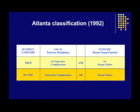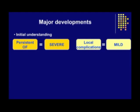But it is now recognized that the duration of organ failure is an important determinant of outcome, in particular that persistent organ failure is a more important determinant of mortality than transient organ failure. It was therefore suggested that only patients with persistent organ failure should be defined as having severe acute pancreatitis, while all other patients, including those with local sterile and infectious complications, be defined as having mild acute pancreatitis.